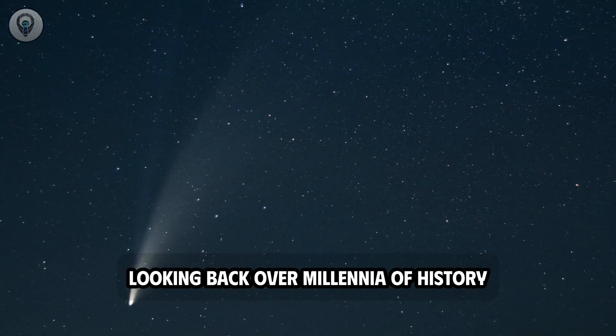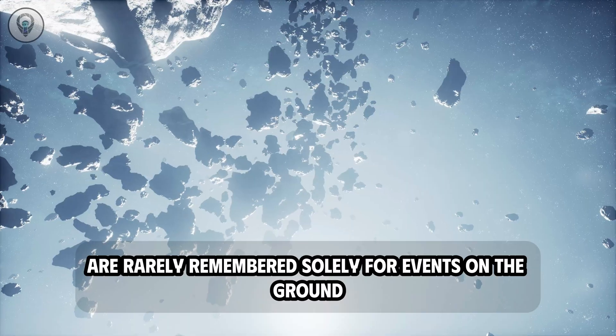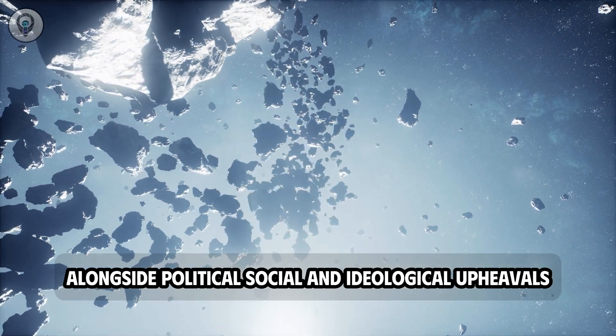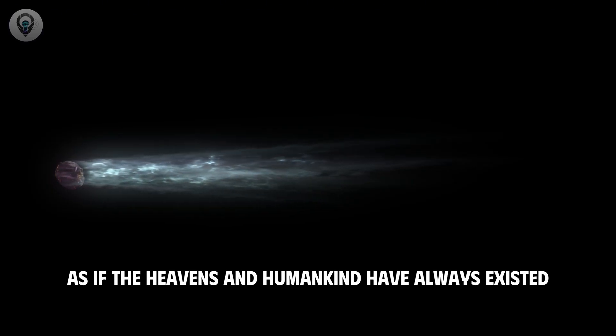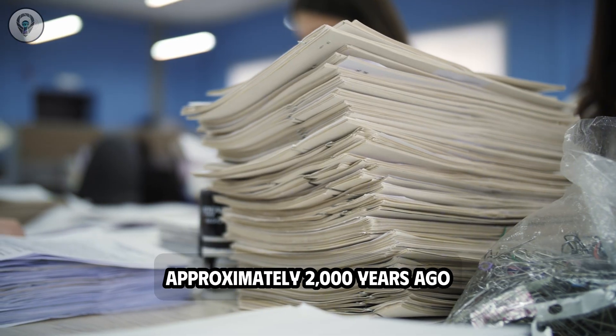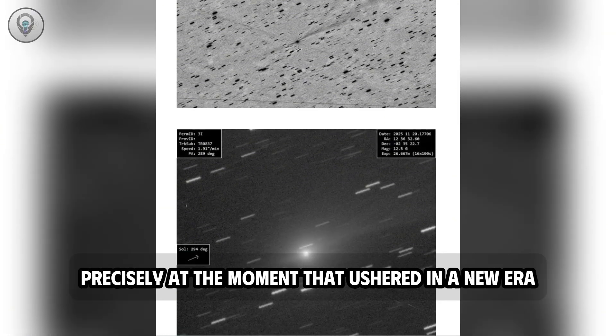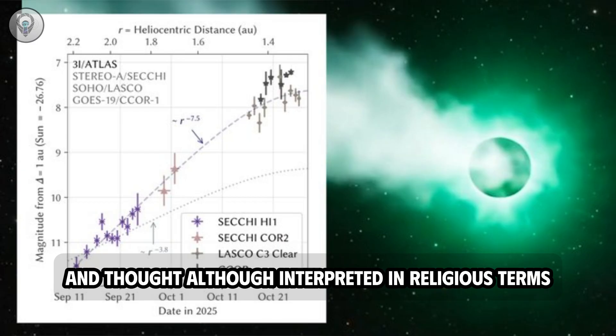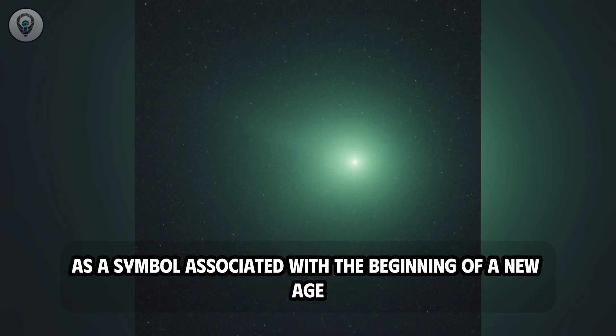Looking back over millennia of history, humanity has come to realize that major turning points in civilization are rarely remembered solely for events on the ground. Alongside political, social, and ideological upheavals, history also preserves memories of celestial signs, as if the heavens and humankind have always existed in an invisible connection. Approximately 2,000 years ago, according to biblical accounts, a star appeared precisely at the moment that ushered in a new era in the history of human faith and thought. Although interpreted in religious terms, this image remains to this day as a symbol associated with the beginning of a new age.